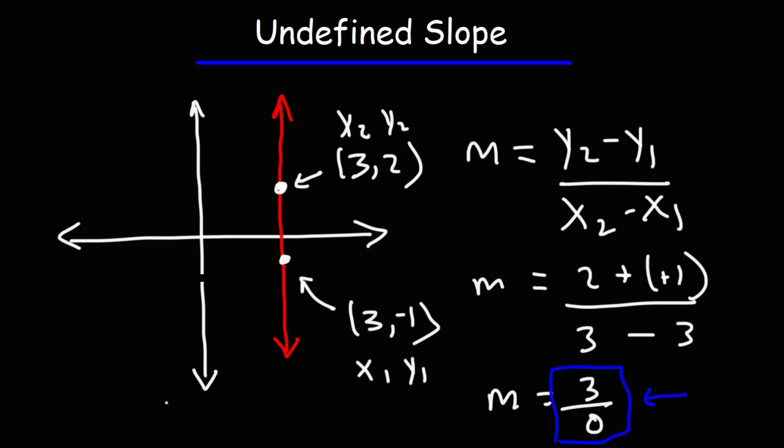So that tells us that this slope has an undefined value. Anytime you have a vertical line, the slope is always going to be undefined.